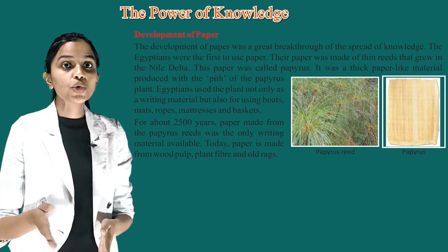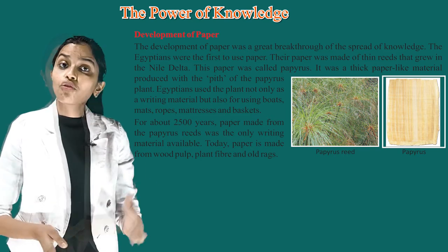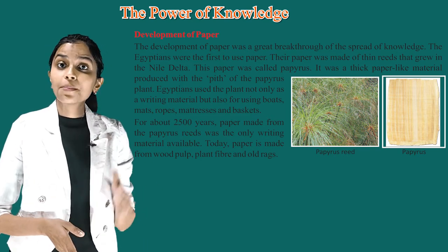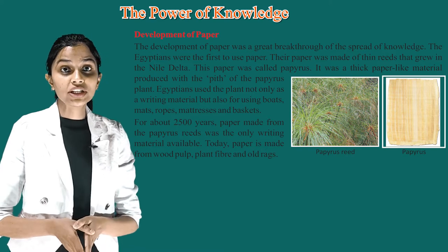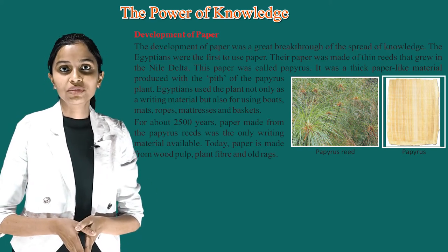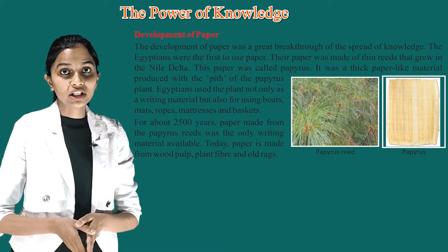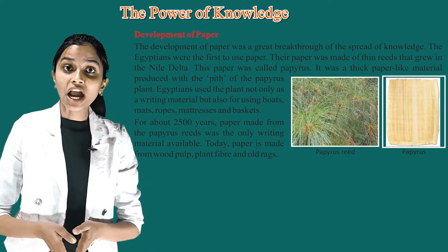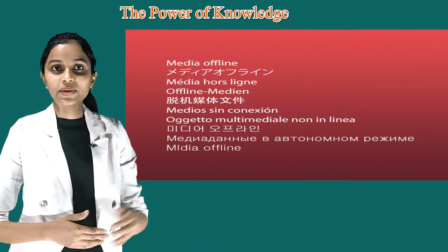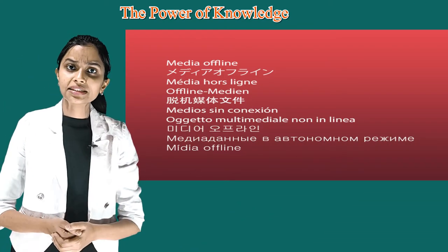Egyptians used the papyrus plant not only as a writing material but also for making boats, mats, ropes, mattresses, and baskets. For about 2,500 years, paper made from papyrus reeds was the only writing material available. Today, paper is made from wood pulp, plant fiber, and old rags.